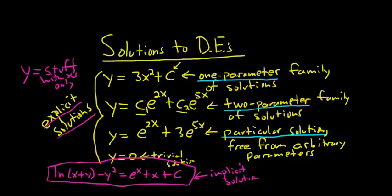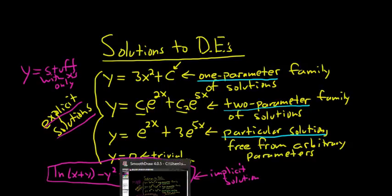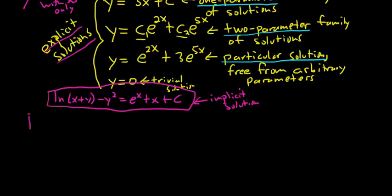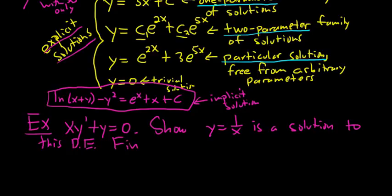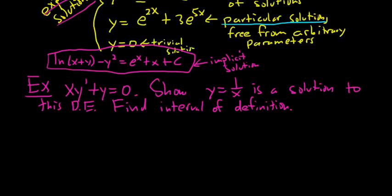Explicit means you solve for y. Let's do a simple example to illustrate another key concept. Say we have the differential equation xy' plus y equals 0, and we want to show that y equals 1 over x is a solution to this DE. We're also going to find what's called the interval of definition.